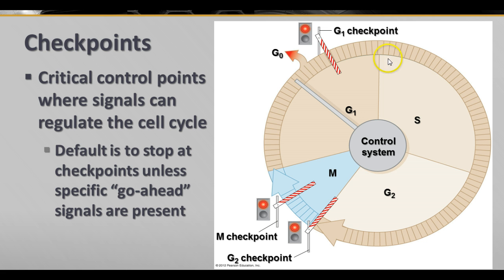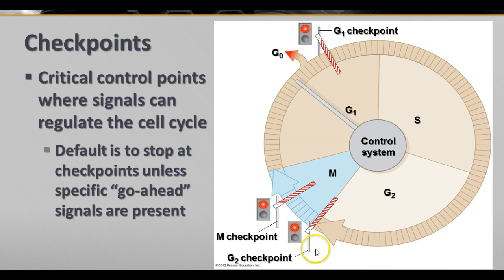The cell will continue until the DNA is replicated and checked to make sure everything is okay. Then the G2 phase will happen, where everything else is prepared, and there's another checkpoint. Again, unless everything is just right and there's a signal to go ahead, everything will stop and the cell will wait there with the duplicated chromosomes.